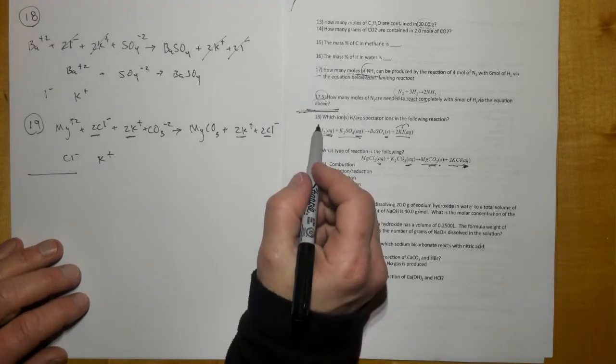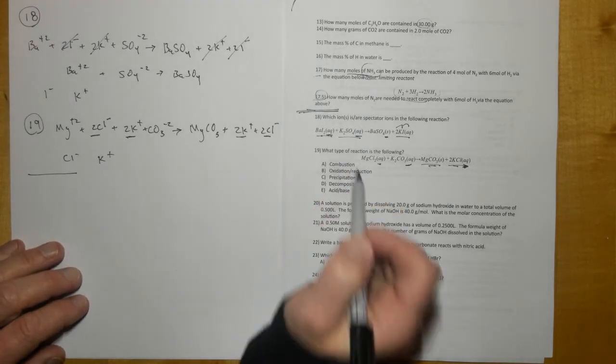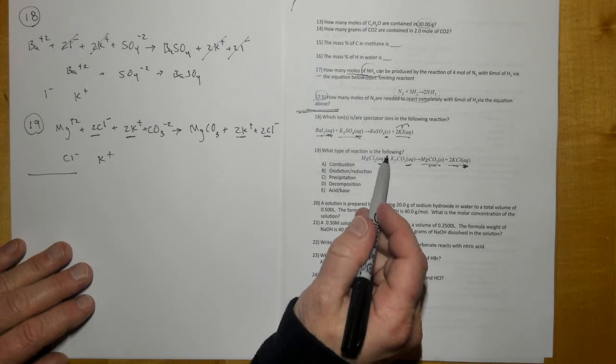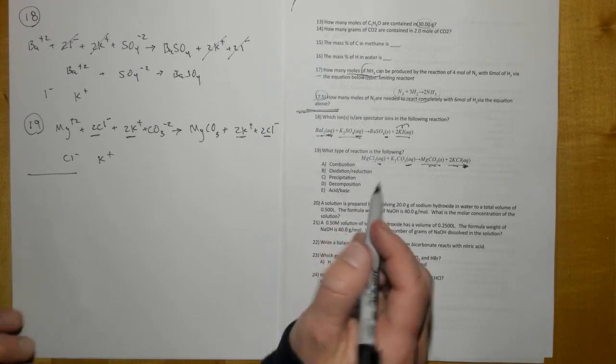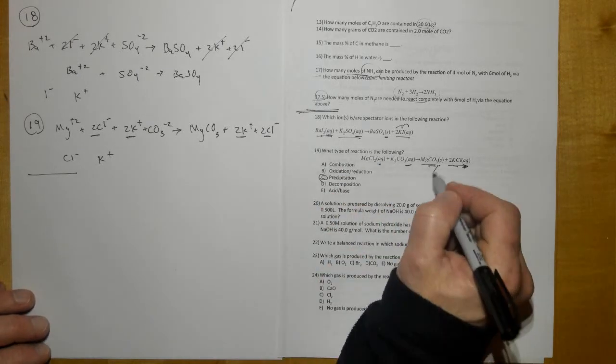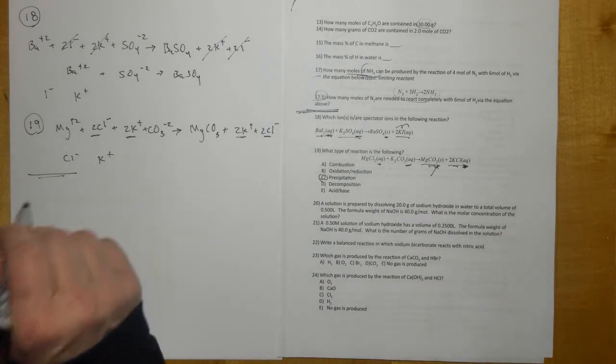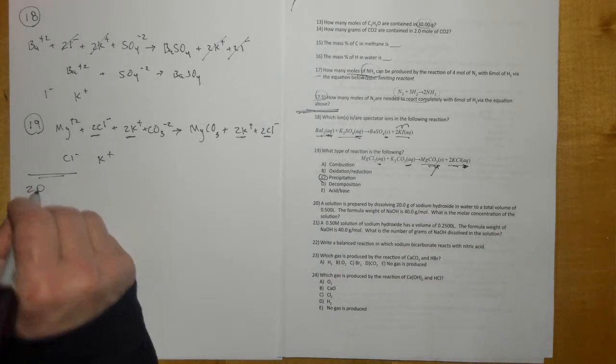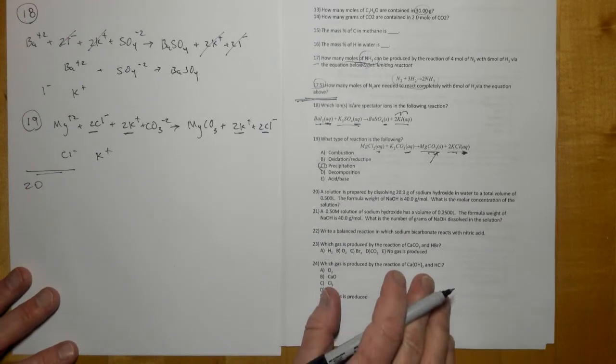I guess that was 18 and 19. And then what type of reaction is this? This is a precipitation reaction because we get a solid right there. I guess I answered two questions at 19.